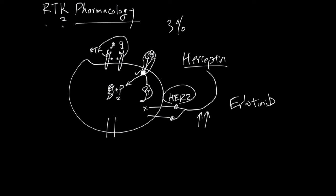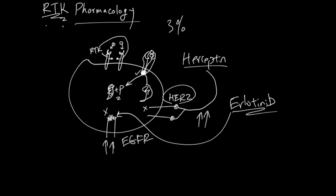Another example is Erlotinib, which goes against EGFR, an RTK. Erlotinib binds to the kinase domain and stops it from acting. EGFR is also activated in cancer — specifically non-small cell lung cancer — so Erlotinib is a drug for this lung cancer subtype.